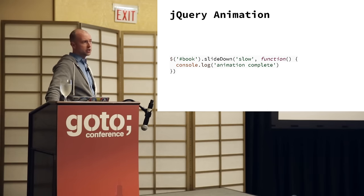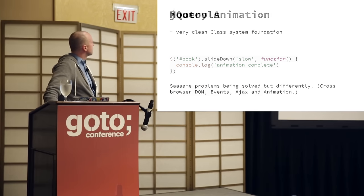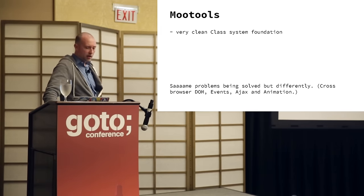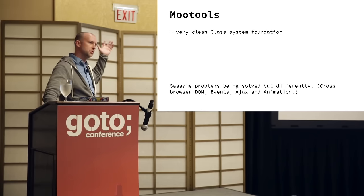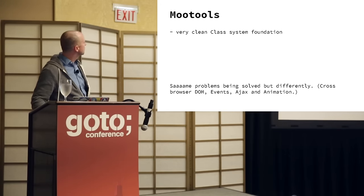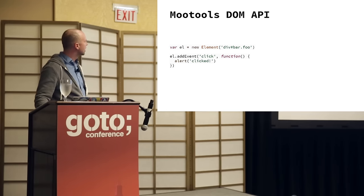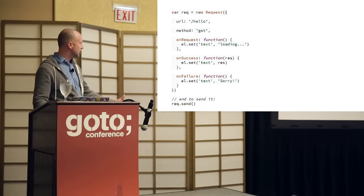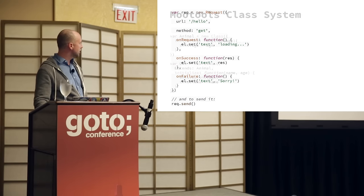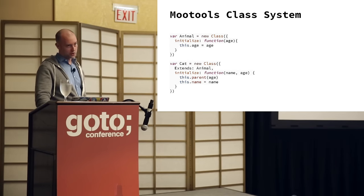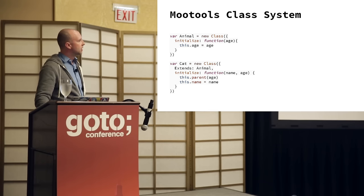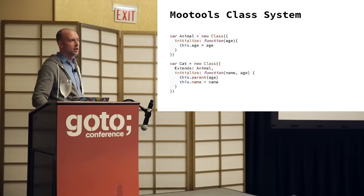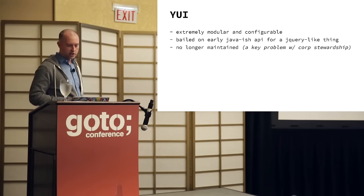jQuery also baked in animation, so you didn't need to load a separate library. Around the same time, another library came around called MooTools. MooTools was pretty sweet — very similar API to the other guys, very similar semantics where you're passing callbacks into constructor objects. MooTools was the first one that kind of introduced a class system and a class-based hierarchy. The code for this I felt was really beautiful and created kind of nice components. But the internet voted and decided it liked jQuery better.